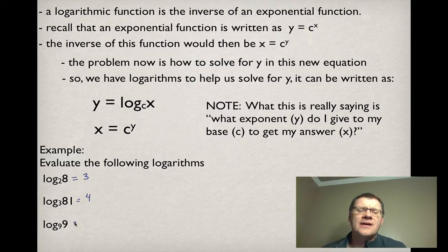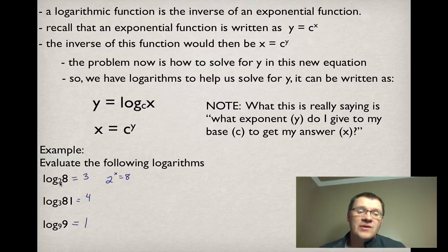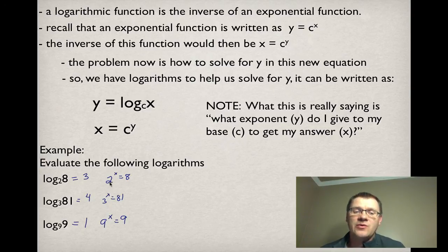Log base 9 of 9: what exponent do I give 9 to get 9? The answer is 1. If you need to, you could rewrite it — like 2 to the power of what gives me 8, or 3 to the power of what gives me 81, or 9 to the power of what gives me 9. That's just the way you would write them if you wanted to convert from logarithmic form into exponent form.